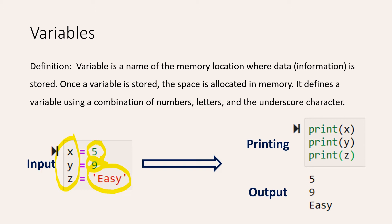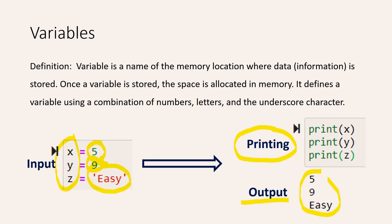So here, if we use the print statement on our three different variables, our output will be five, nine, and easy — because that is exactly what is stored in our variables. Variables are very nice if you have very long code and you want to store certain information. You can always store them in different variables and use them to make some kind of interconnectedness, and in the end to actually get to your goal.